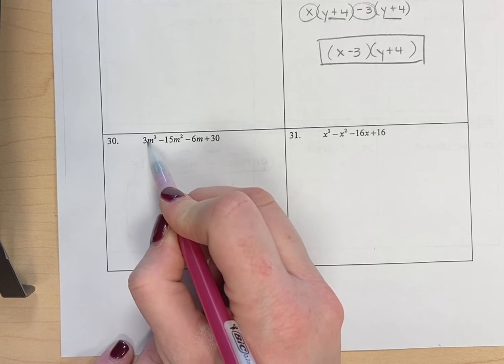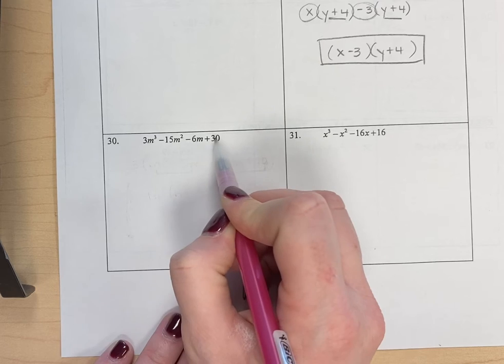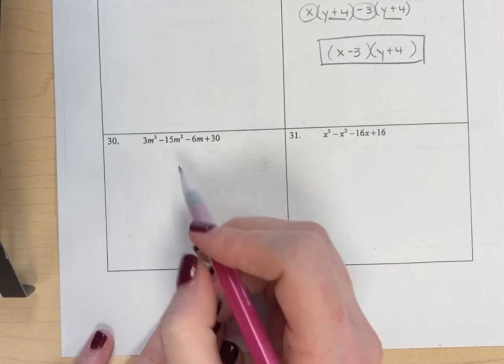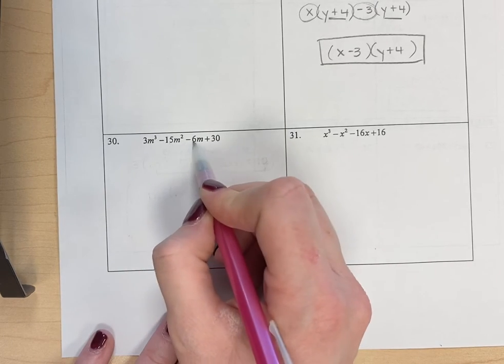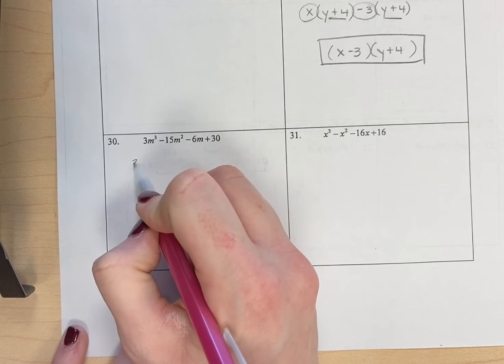So if you look across this problem, you'll notice that 3 goes into all of these numbers here: 3, 15, 6, and 30. So what I'm going to do is I'm going to factor out a 3.